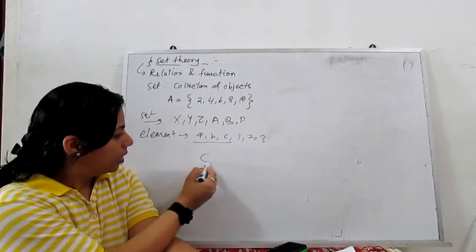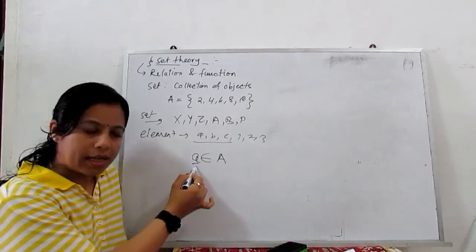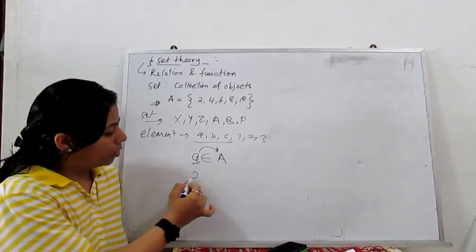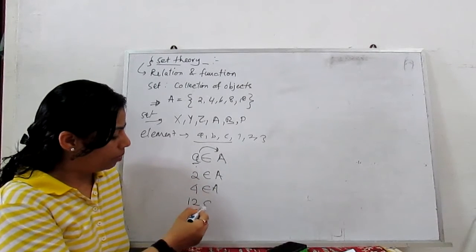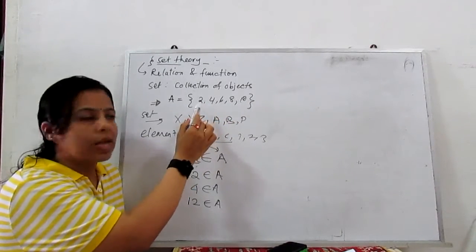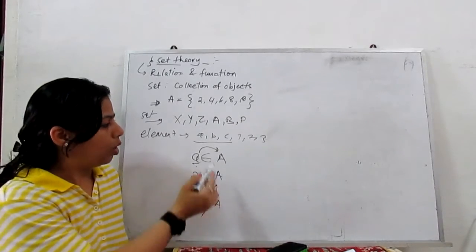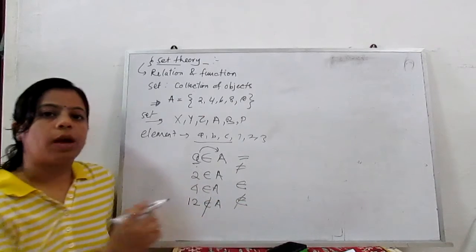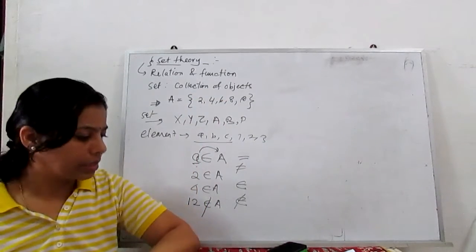Now another sign: this symbol is called 'belongs to'. So if we say a belongs to A, it means element a is contained in set A. For example, 2 belongs to A, 4 belongs to A. Now if I say 12 belongs to A — is this correct? No. This set is ended; only 5 elements are there: 2, 4, 6, 8, and 10. So 12 does not belong to the set. If we put a cut through the symbol it is called 'not belongs to' — same as equal to and not equal to. If some elements do not belong to that set, we write it like this — it does not belong from the given set.